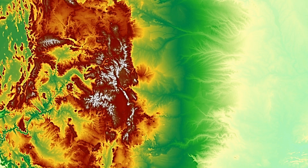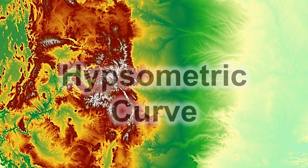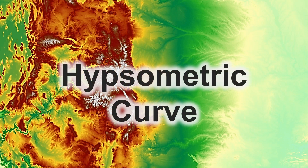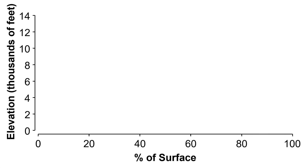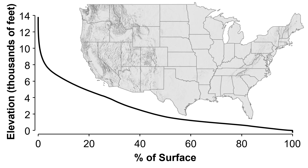To look at elevation distributions, we often use something called the hypsometric curve. That is a plot of elevation on the vertical axis and the percent of the ground surface that exceeds that elevation on the horizontal, over some area of interest — here shown for the contiguous U.S.